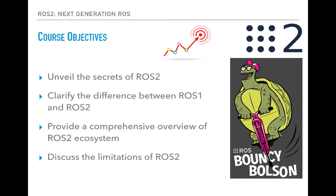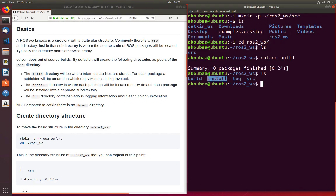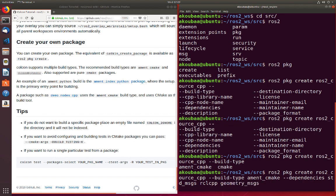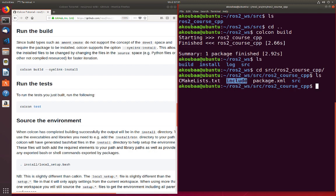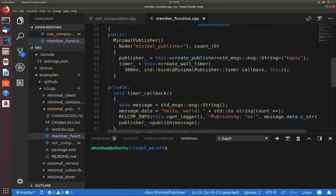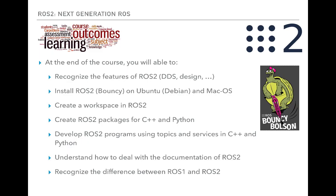Furthermore, we discuss the current state of ROS2 and clarify its limitations. At the end of the course, you will be able to recognize the features of ROS2, such as DDS — Data Distribution Service — and its design goals. You will be able to install ROS2 Bouncy on Ubuntu using Debian packages and on Mac OS. You will learn how to create a workspace and ROS2 packages for both C++ and Python, develop ROS2 programs using topics and services, understand the documentation of ROS2, and recognize the differences between ROS1 and ROS2.